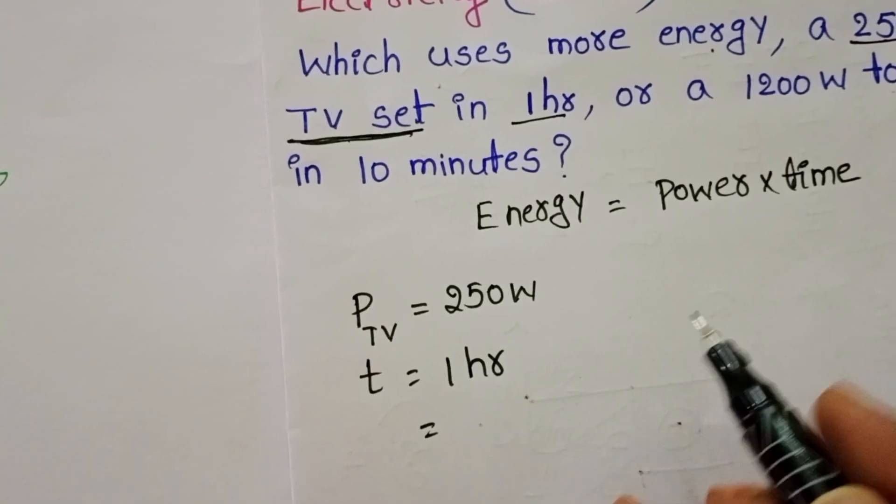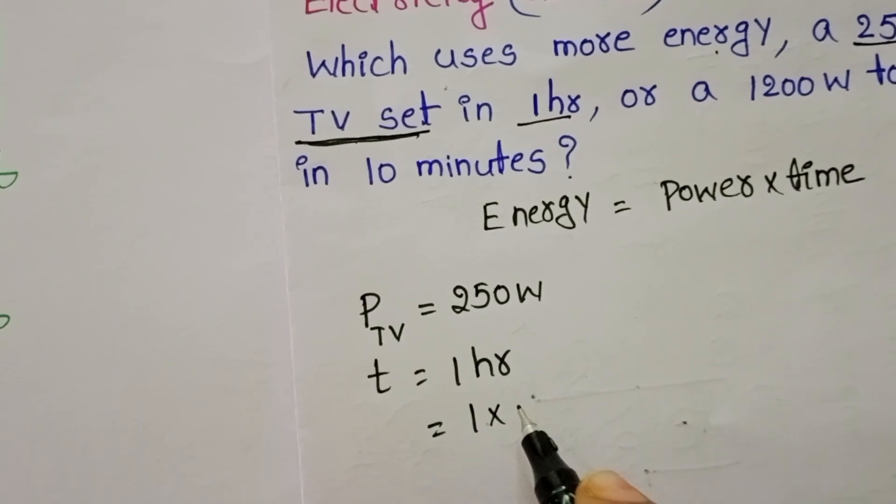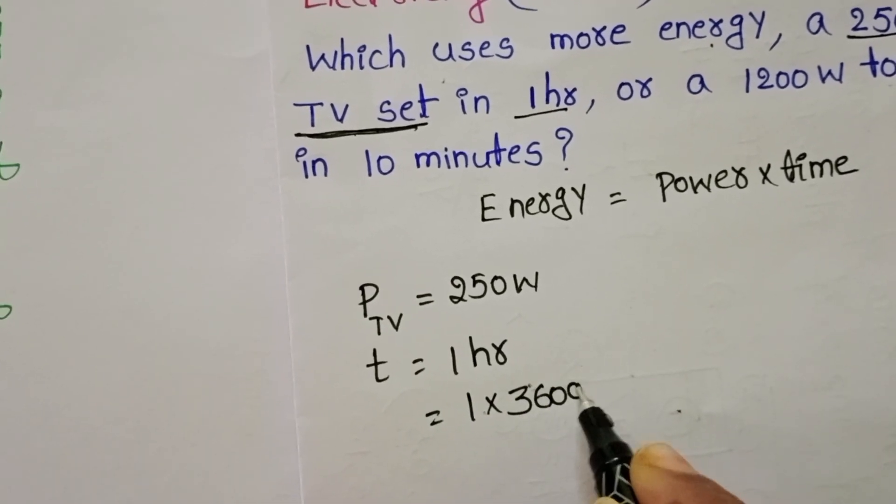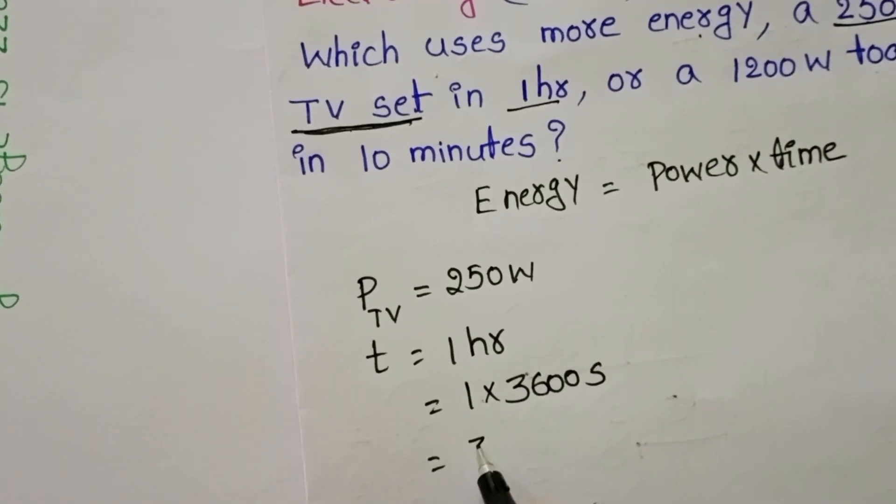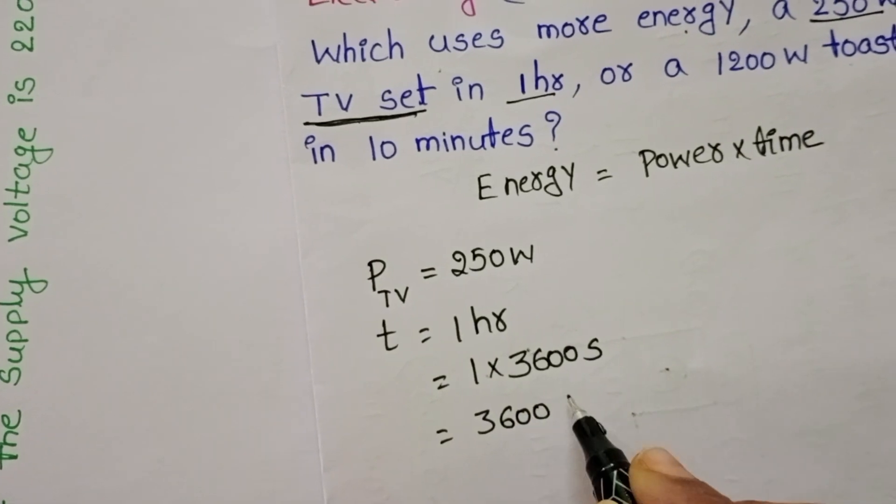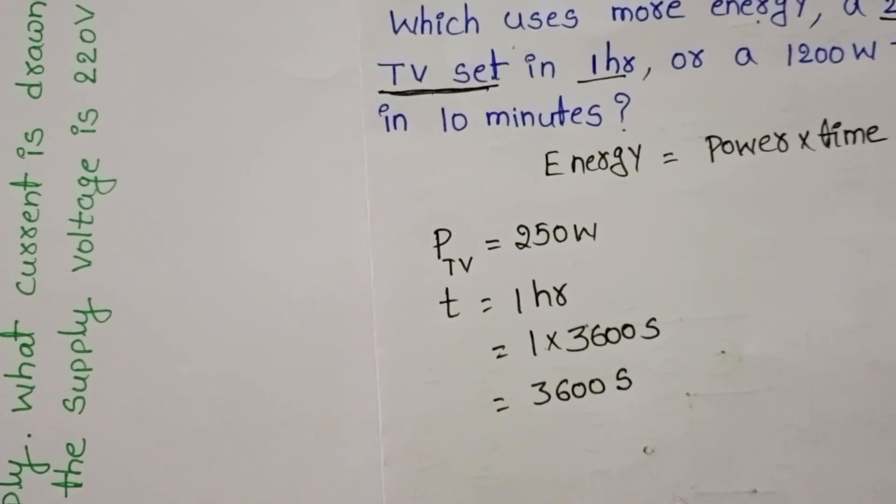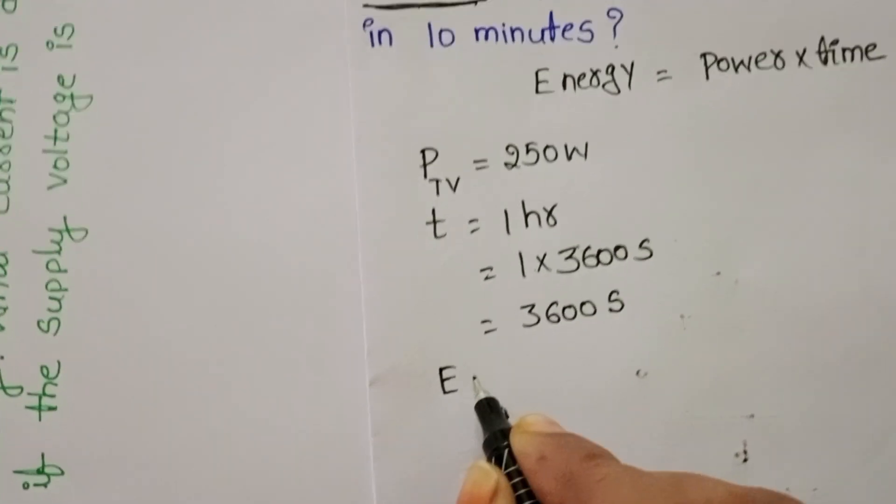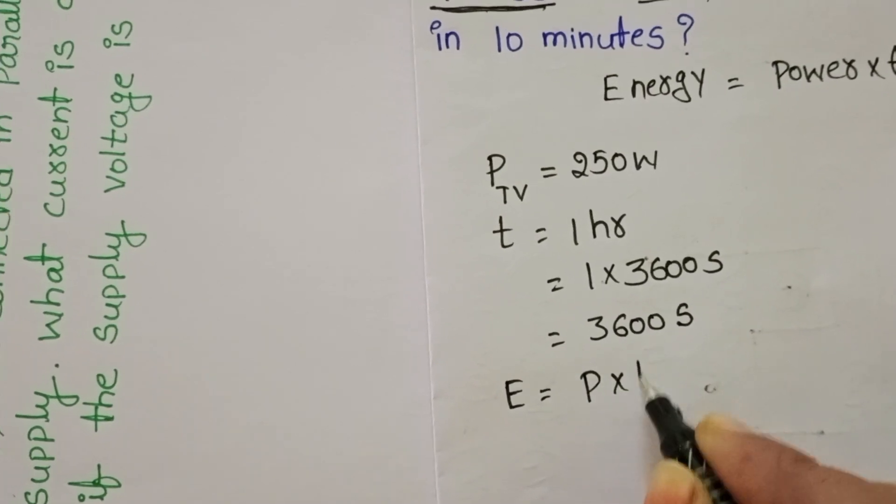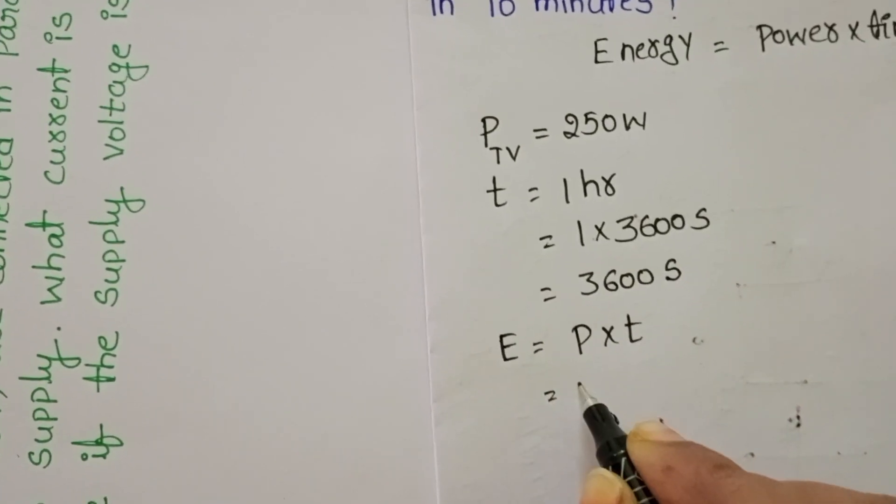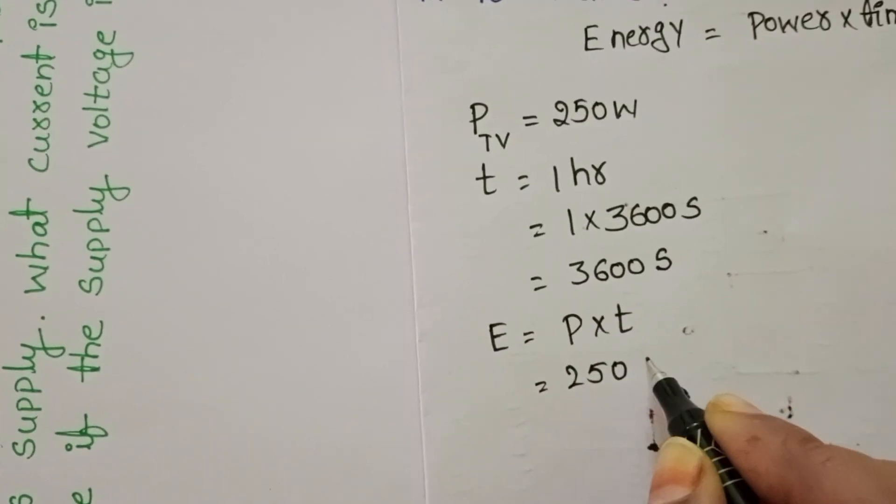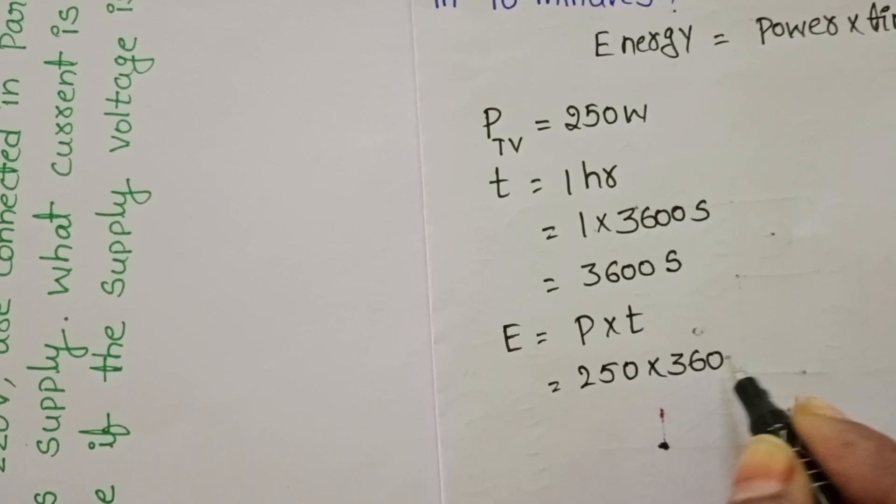Convert 1 hour to seconds: 1 into 3600 seconds. Then time equals 3600 seconds. Take the formula: energy equals power into time. Power is 250 Watt and time is 3600 seconds.